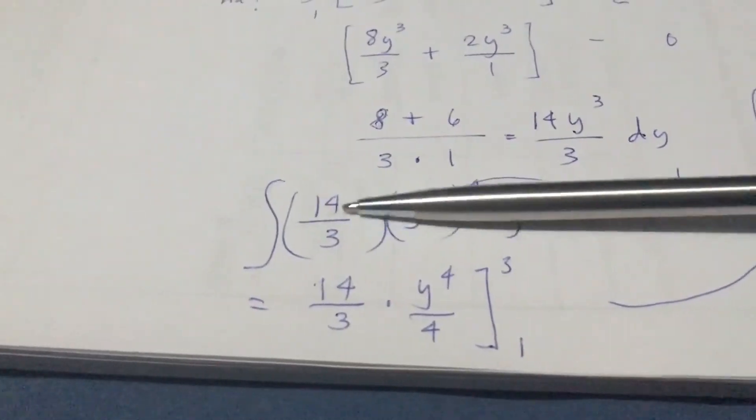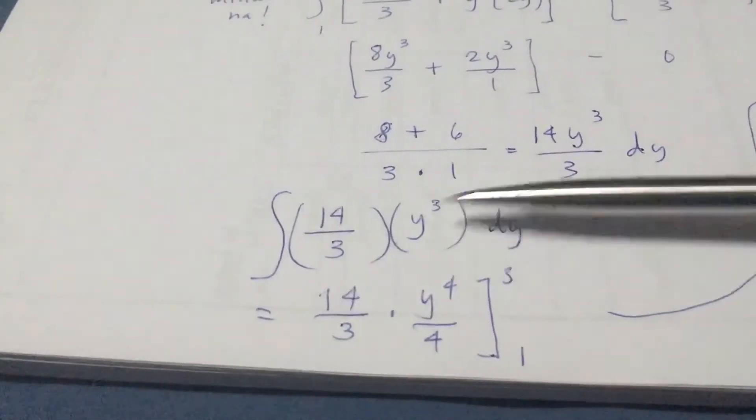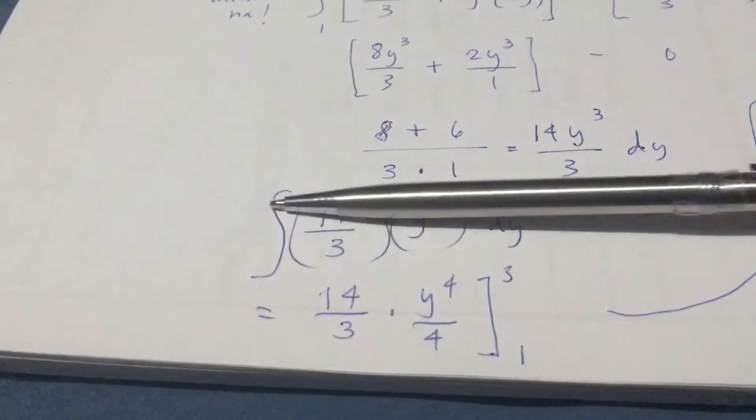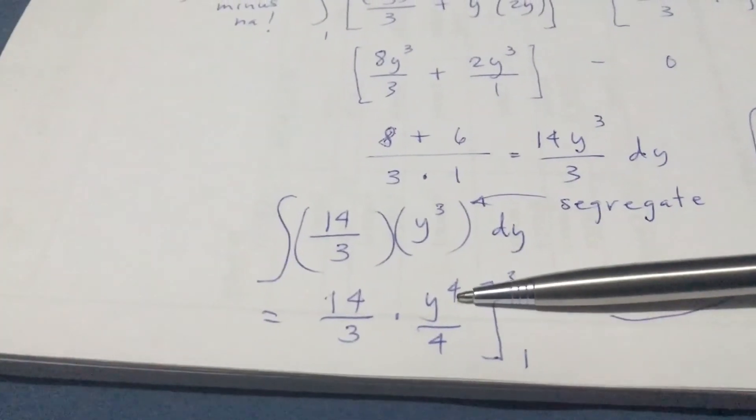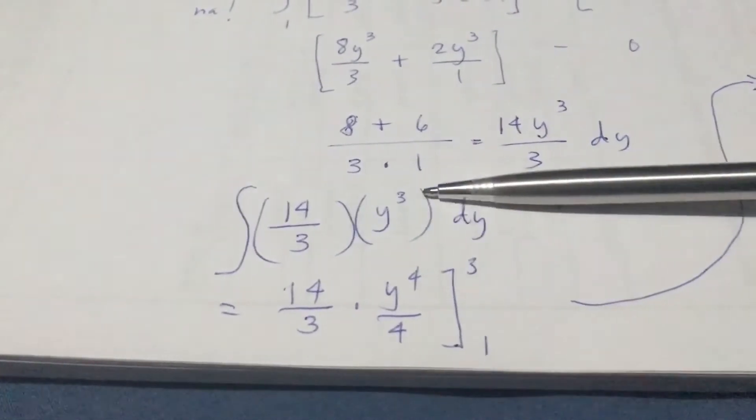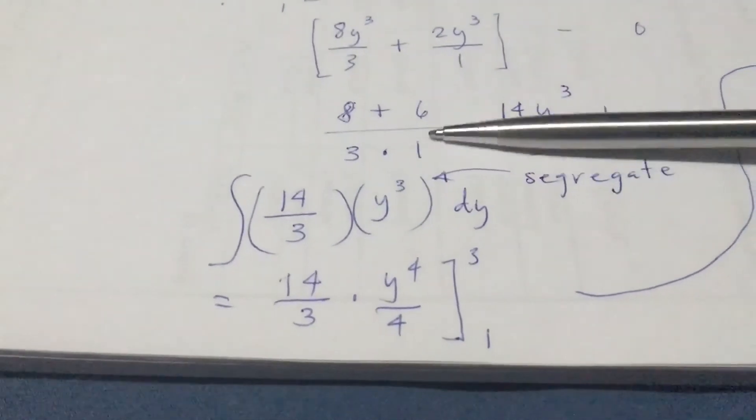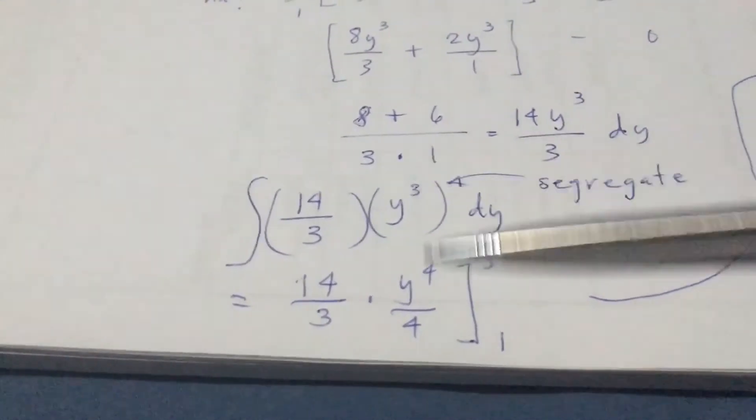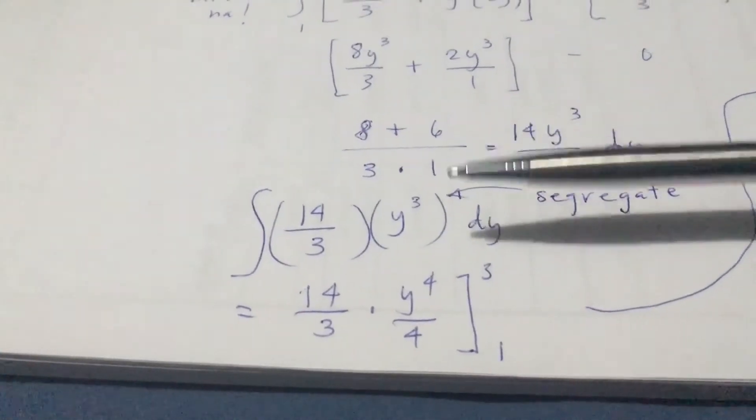If you segregate that, that will be 14 over 3 and then y raised to the third power. If you integrate that, that would be y raised to the fourth over four. Like I said before, you got to add one to the exponent and then copy the number four and place it to the denominator.